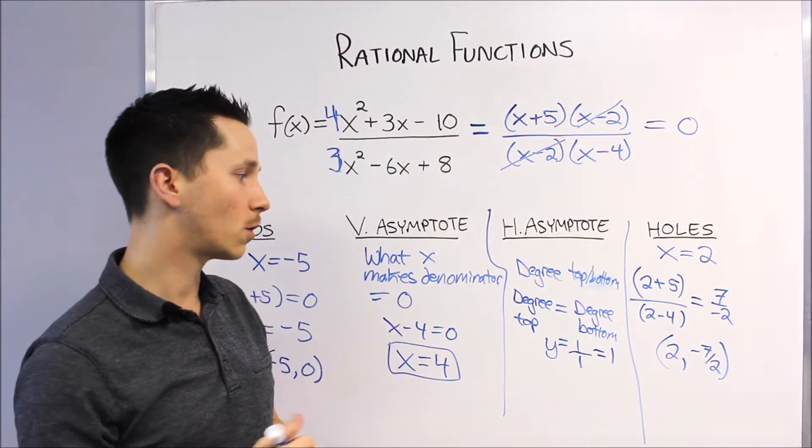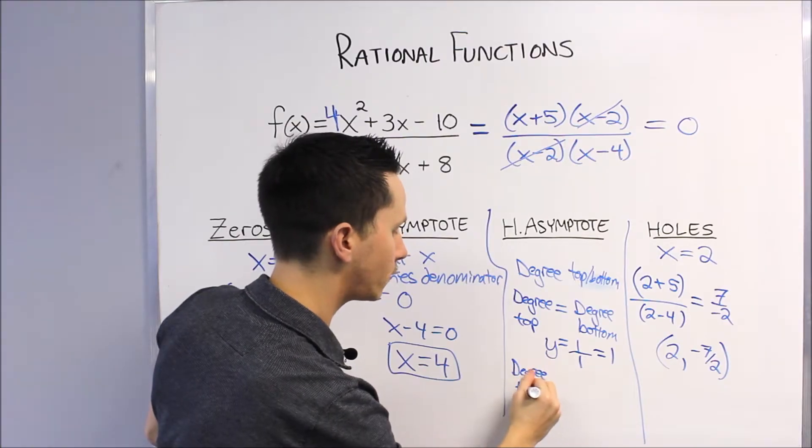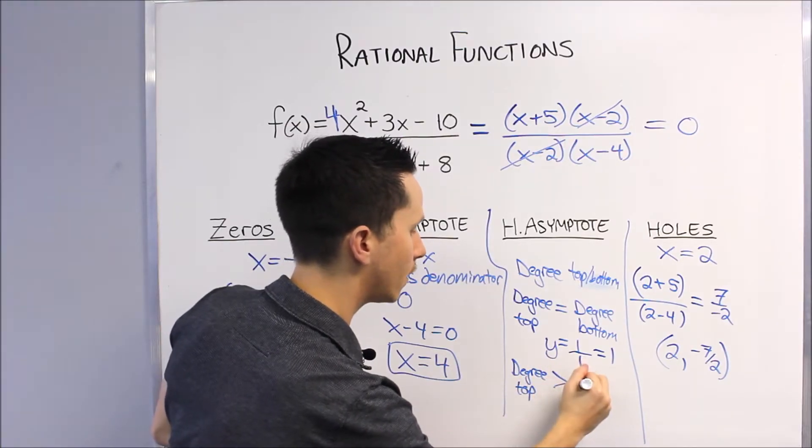The other one we have to know is if the degree of the top is greater than the degree of the bottom, in this case there is no horizontal asymptote when the top is greater than the bottom.